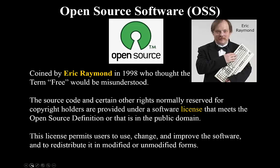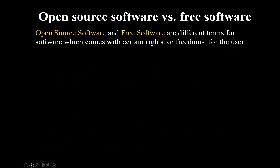Open source software was coined by Eric Raymond in 1998, who thought the term 'free' would be misunderstood. The source code and certain other rights normally reserved for copyright holders are provided under a software license that meets the open source definition or that is in the public domain. This license permits users to change, use, and improve the software and to redistribute it in modified or unmodified forms — very similar to the free software license. So open source software and free software are different terms for software which comes with certain rights or freedoms for the user.